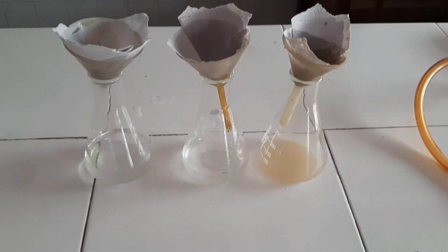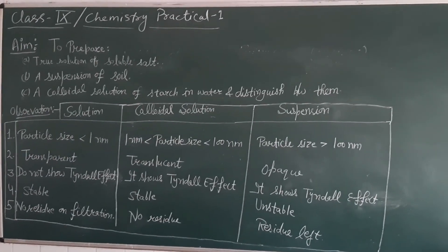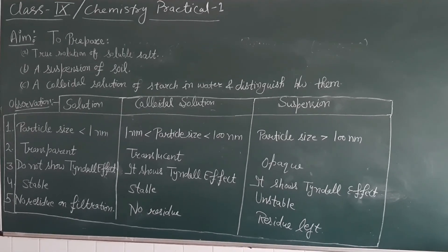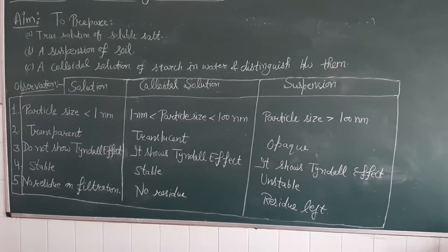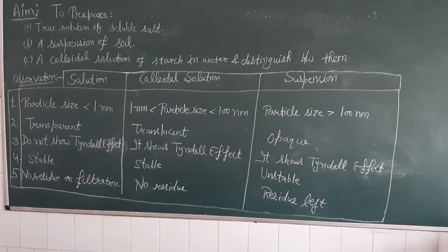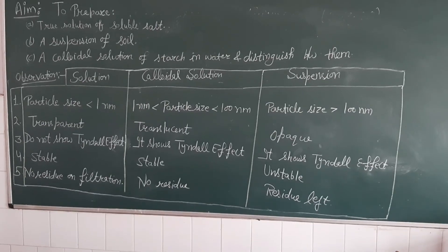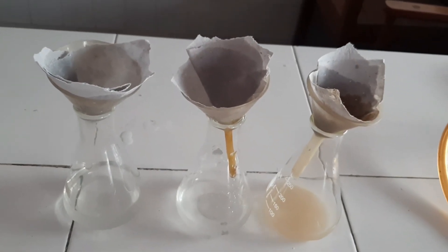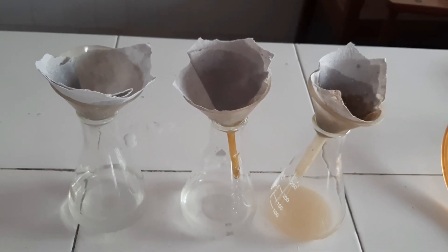So this was the experiment that we performed today. The aim was to prepare three types of mixtures — true solution, colloidal solution, and suspension — and to distinguish between them on the basis of properties: particle size, transparency, Tyndall effect, stability, and filtration. That's all for today. Thanks for watching till the end. I hope you understood the practical. We will be with you in the next video. Goodbye.